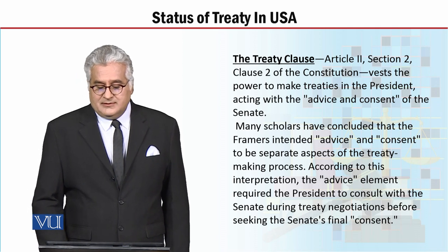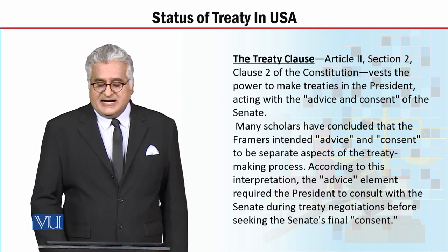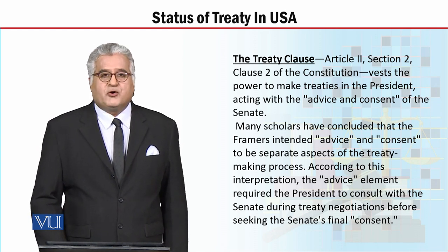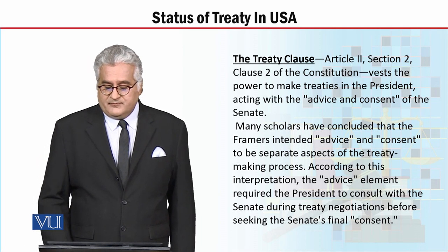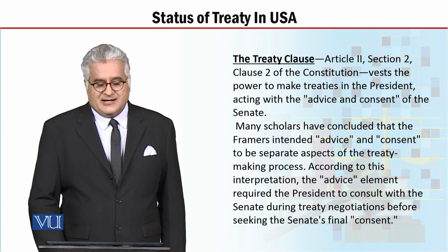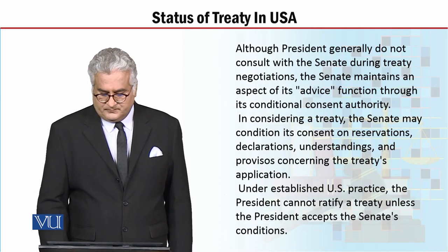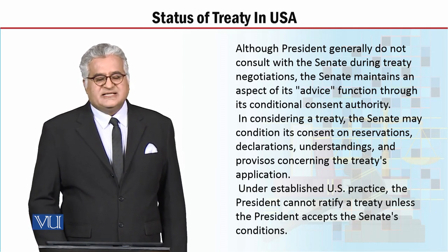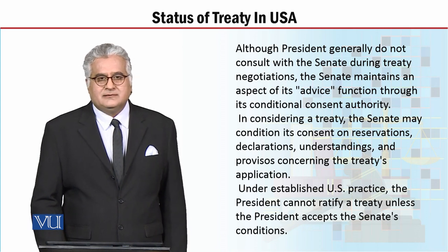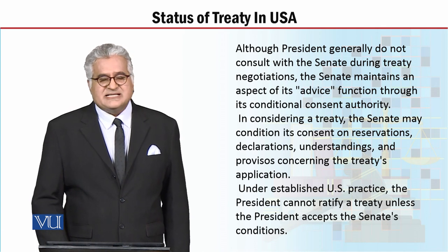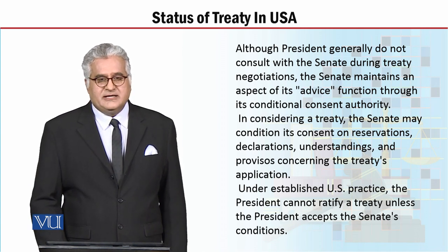In this regard, many scholars say that the framers of the U.S. Constitution intended the advice and consent to be separate aspects of the treaty-making process. According to this interpretation, the advice element required the president to consult with the Senate during treaty negotiations before seeking the Senate's final consent. However, in practice, when the president of the U.S. is negotiating a treaty, he does not formally consult with the Senate. Instead, the Senate plays its advisory role by giving conditional consent authority to the president.